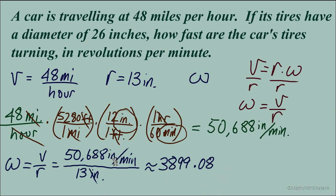We can see that the inches cancel and we're left with something per minute. With rotational velocity, this unit that is missing is radians, a dimensionless unit. So we're looking at 3,899.08 radians per minute as the rotational velocity,